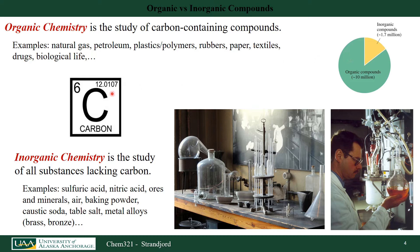If we look at the periodic table, we represent carbon as C. It contains six electrons, six protons, and six neutrons. The other branch of chemistry that contrasts organic chemistry covers molecules that do not contain carbon — we classify those as inorganic chemicals, and the study is inorganic chemistry. Examples include sulfuric acid, nitric acid, ores and minerals, rocks, air, baking soda, caustic soda, table salt, and metal alloys such as brass and bronze.